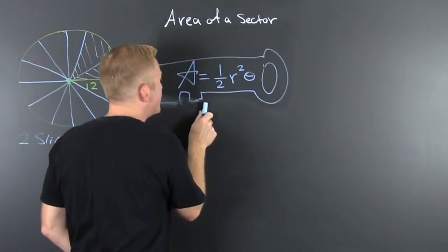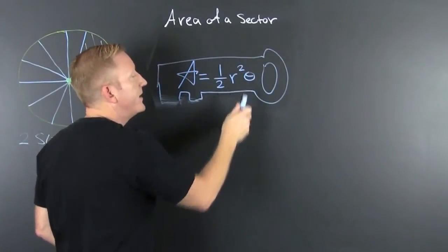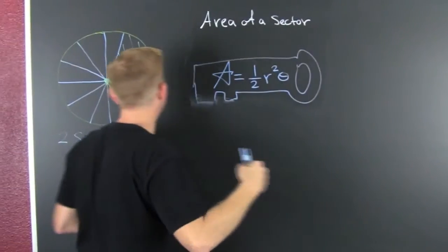We're looking for the area of the sector. Fancy, eh? It's going to be half the radius squared times theta. We developed that in a previous problem. Here's our problem.